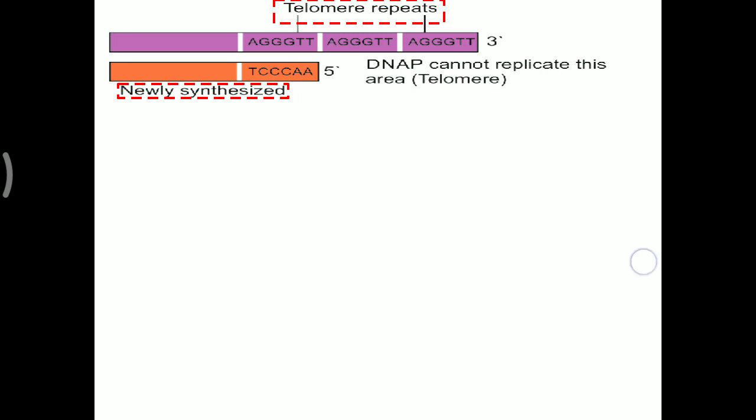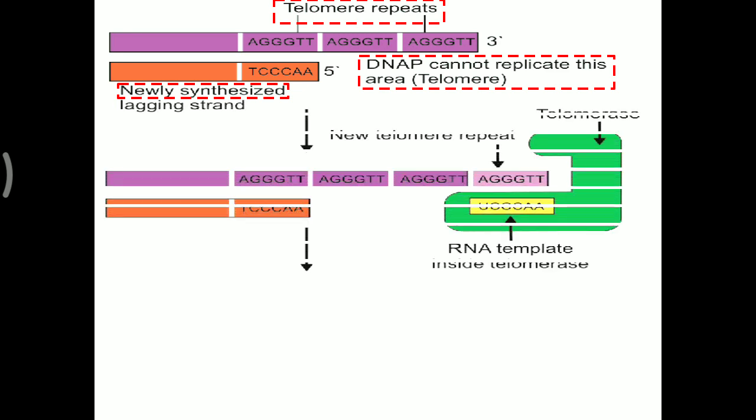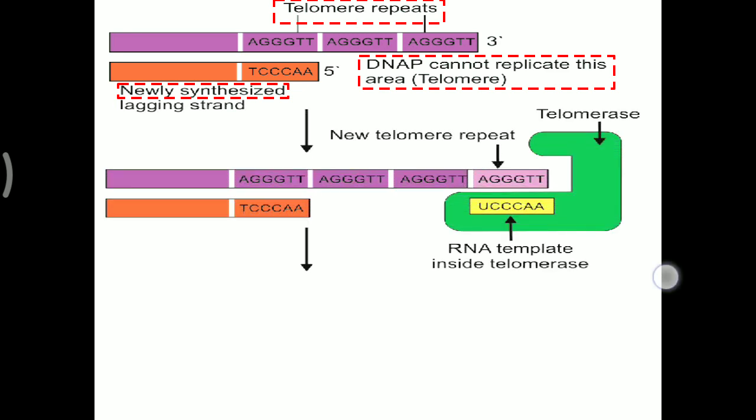Because DNA polymerase cannot replicate this area, whatever the unreplicated area on the parent strand is called a telomere. For that, a new telomere repeat sequence needs to be synthesized, and that activity will occur with the help of telomerase enzyme.